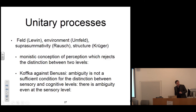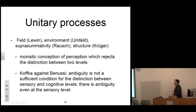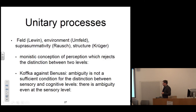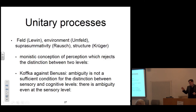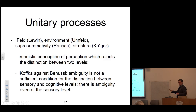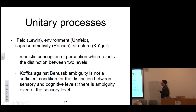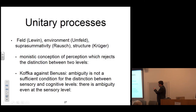Koffka also made the point against Benussi that ambiguity is not a sufficient condition for the distinction between sensory and cognitive levels. There is actually ambiguity even at the sensory level. So there was first the accusation that the constancy hypothesis was a theoretical construct — the first point against the Graz school coming from the Berlin school. But there is a more interesting point made by Koffka: the problem of simultaneous contrast.